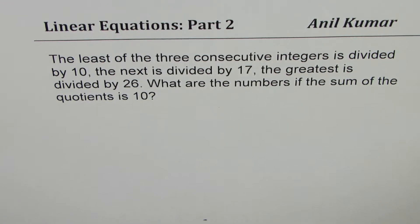The question here is: the least of the three consecutive integers is divided by 10, the next is divided by 17, the greatest is divided by 26. What are the numbers if the sum of the quotients is 10?